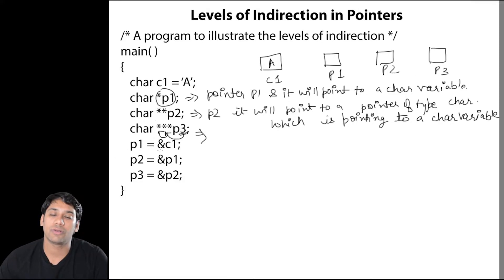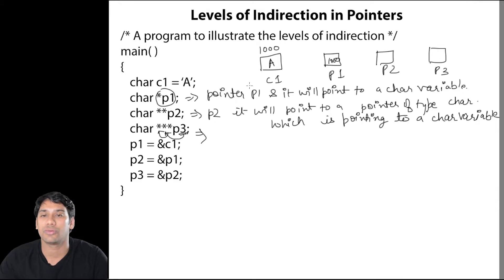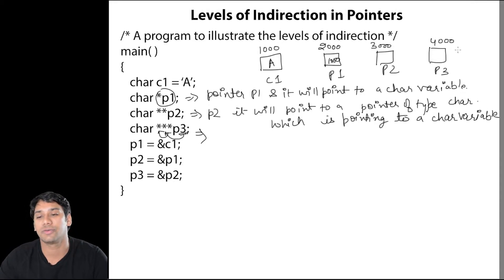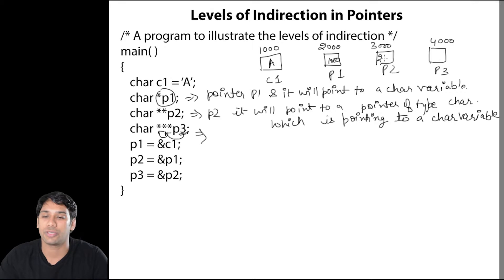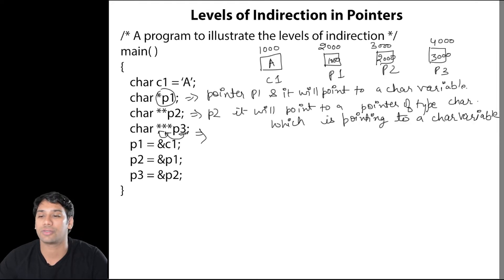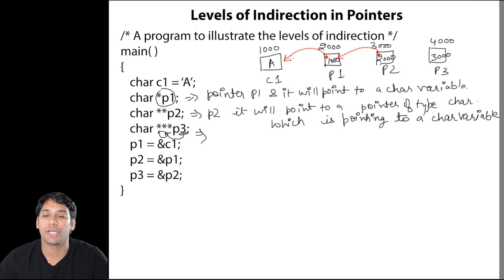P1 is equal to ampersand C1, that means P1 is storing the address of C1. Let us suppose the address of C1 is 1000, therefore P1 is now going to store 1000. Let us suppose the address of P1 is 2000, address of P2 is 3000, and the address of P3 is 4000. In P2 I am storing the address of P1. That means P3 is storing the address of P2 which is 3000. So P1 is pointing to this character variable, P2 is pointing to pointer P1 which is again pointing to this character variable, and P3 is pointing to P2 which is again pointing to P1 and which is again pointing to this character variable.